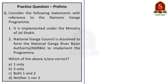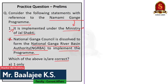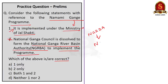The second question is on the Namami Ganga program — a two-statement question to find correct statements. Statement 1: It is implemented under the Ministry of Jal Shakti. This is correct. Statement 2: National Ganga Council is dissolved to form the National Ganga River Basin Authority to implement the program. This is incorrect — actually, National Ganga Council was formed after the dissolution of the National Ganga River Basin Authority. So statement 1 is correct and statement 2 is incorrect — the correct answer is option A, one only.